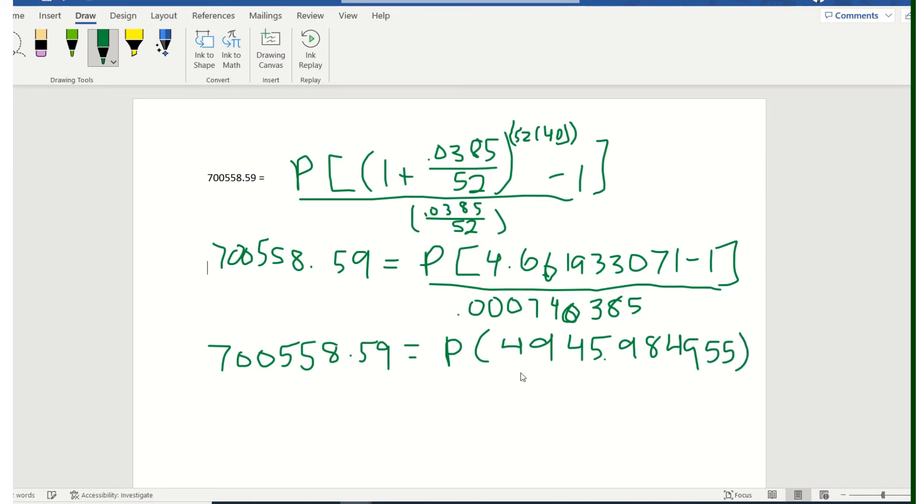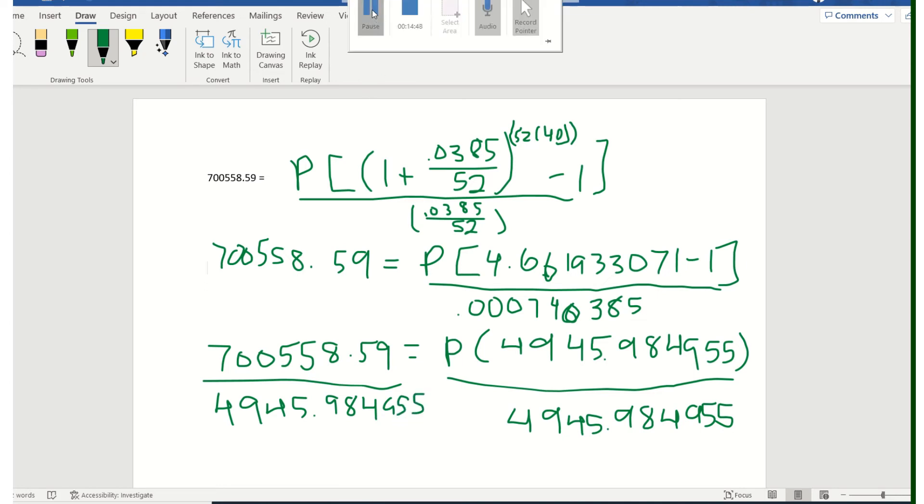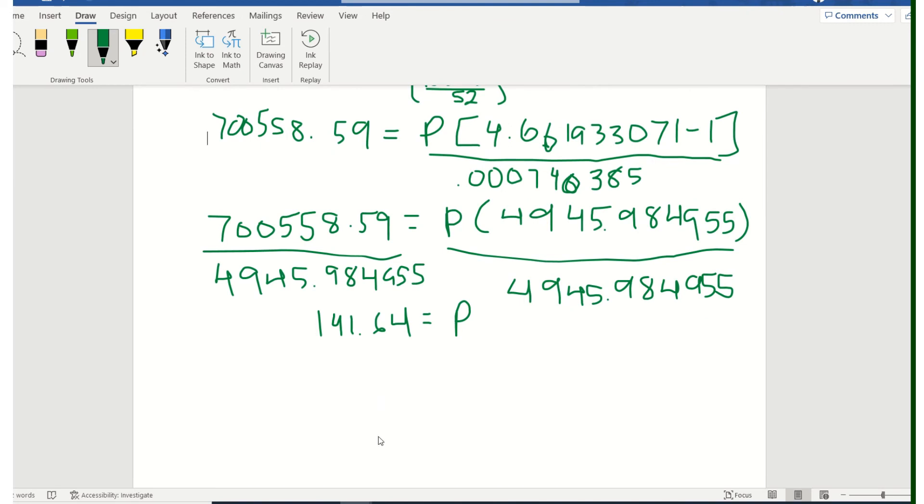And then our last step, we want to divide out this number that's with our P on both sides. And we will know what she has to deposit each week. That ends up being, I'm going to go ahead and round off to the cent here, $141.64 a week. So let's keep in mind that that's a week, every week she's putting in. So she's putting in close to $600 a month.